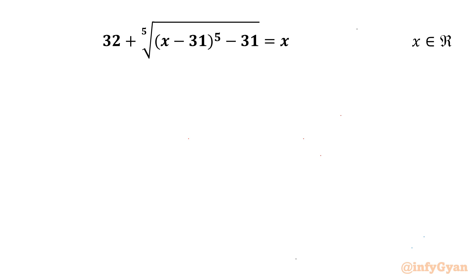Welcome to Infigyan, my dear friends. In this video we have one very interesting question from Radical Equations: 32 plus the 5th root of (x minus 31) whole power 5, minus 31, equal to x. We have to find out real solutions only.